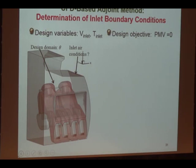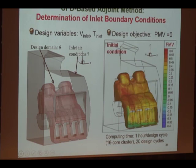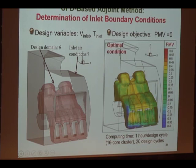Starting with conventional conditions, you can see the initial PMV is not very good — about 0.5. That's the current design — even in first class, you don't really feel very comfortable. But then we can change it. You see the color changes from red to yellow, to green, and finally blue. The final optimal design is more or less green — PMV close to zero. What we do here is change the supply velocity and temperature, and this final velocity, temperature, and supply angle is automatically calculated with the adjoint method.